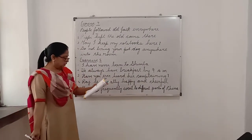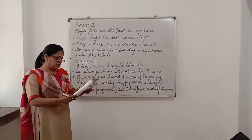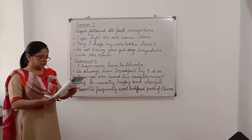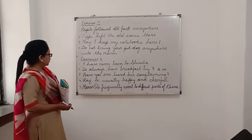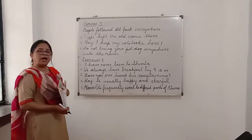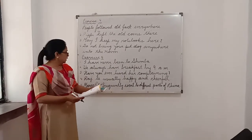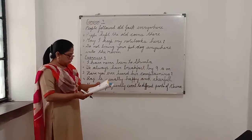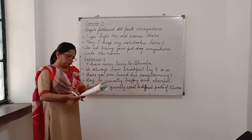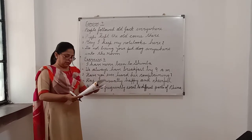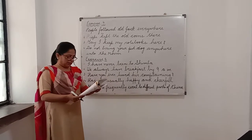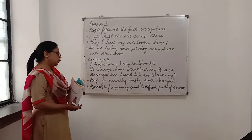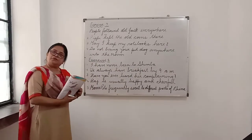Now we have the fourth one: 'Raj is happy and cheerful' — and we have 'usually' in the bracket. So we write it as: 'Raj is usually happy and cheerful.' Now we have the last one, number 5: 'Marco Polo went to different parts of China' — and we have 'frequently' in the bracket. So we write it as: 'Marco Polo frequently went to different parts of China.'